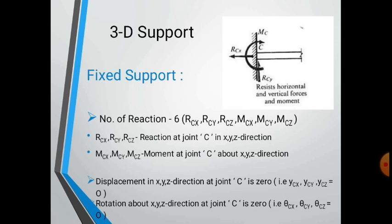Now for 3D supports, the fixed support generates six reactions: RC x, RC y, RC z along the three coordinate axes, and corresponding moments MC x, MC y, and MC z about each axis. The displacement at joint C is zero in the x, y, and z directions, and the rotation about the x, y, and z directions at joint C is also zero, since it is a fixed support.